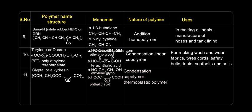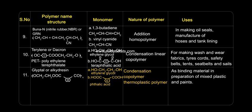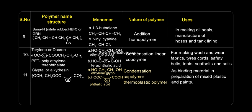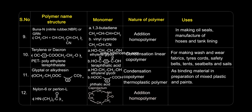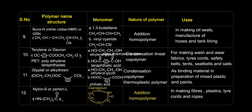Glyptal (or Alkyd resin): used as a binding material in preparation of paints and mixed plastics. Nylon 6 (Perlon L): used in making fibres, plastics, tyre cords, and ropes.